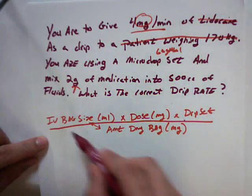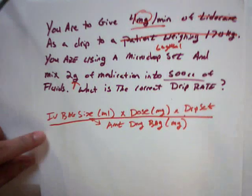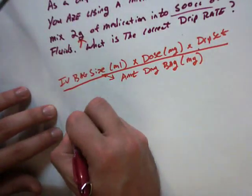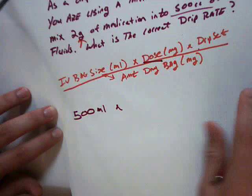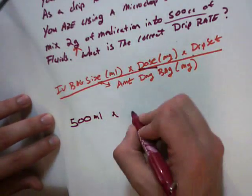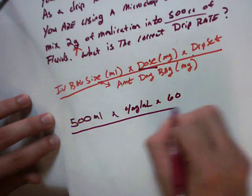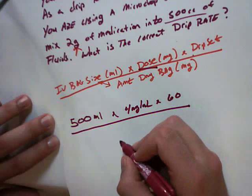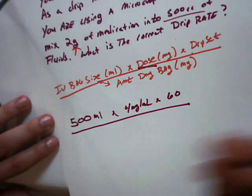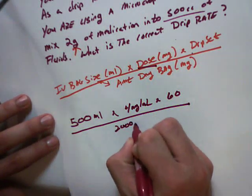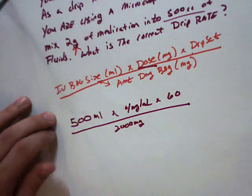So the first thing we have to know is IV bag size, and they tell us it's 500 cc. So we'll just slide this up so we can see a little better. 500 milliliters times our dose, which is 4 milligrams per minute, times our drip set, which is 60. We're going to put all that over the amount of medications in our bag, which is actually 2,000 milligrams. Because remember, we can't put grams in a problem with milligrams. The numbers just don't jive. You have to convert.